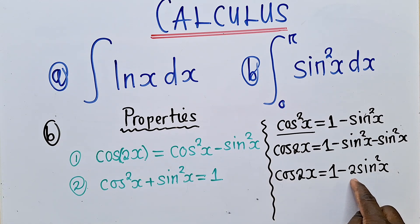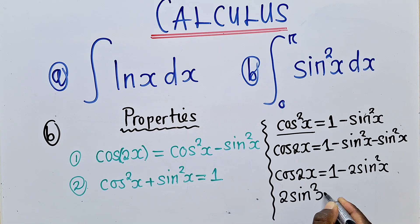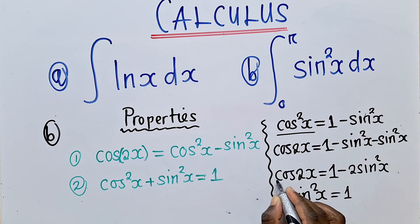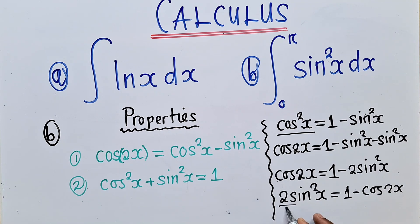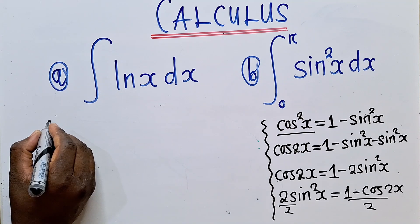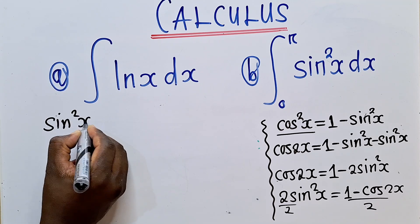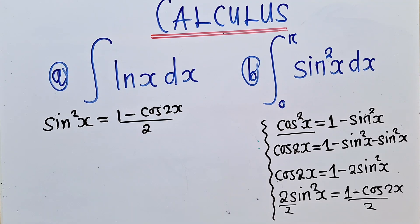After making this the subject, we go to property number 1 and substitute where cos²x is. So it will look like this: cos 2x is equal to 1 minus sin²x minus sin²x, which gives us cos 2x equals 1 minus 2·sin²x. So we also make 2·sin²x the subject: 2·sin²x equals 1 minus cos 2x, and therefore sin²x equals (1 minus cos 2x) over 2.